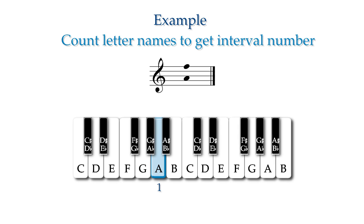We first count letter names to get the interval number. A to A, a unison, is 1. A to B is 2. A to C is 3. A to D is 4. A to E is 5. And A to F is 6.